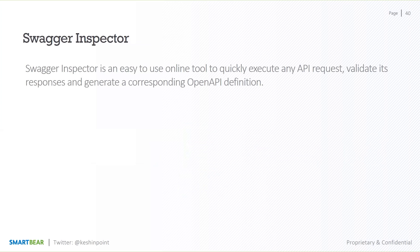For that process, we have a tool called Swagger Inspector that allows you to generate the OpenAPI definition from an existing API. Swagger Inspector is completely free, which ties into Swagger's policy of open source as well as free tools and some commercial tools, to make sure that our community gets the best out of everything we have to offer.